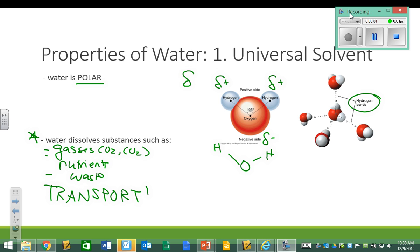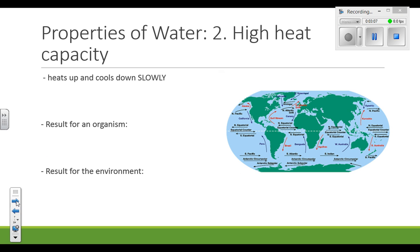Now, the fact that water is polar doesn't just mean that it's a good solvent. There's a couple of other properties that go along with that. The second thing about water is that it has a high heat capacity. You might remember learning in Science 10, it heats up and cools down very slowly. In other words, it takes a lot of energy for water to change temperature.